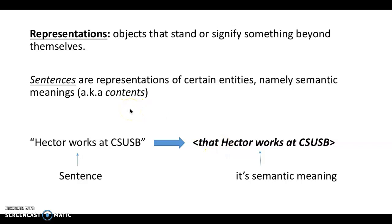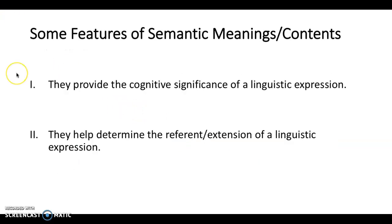Sometimes in the philosophy of language, the meaning of a sentence is called the content of a sentence. So the content of 'Hector works at Cal San Bernardino' is that Hector works at Cal San Bernardino. We will use the terms semantic meaning and content interchangeably. Two features content traditionally seems to have: first, it accounts for the cognitive significance of a sentence. When you hear 'Hector works at Cal San Bernardino', something lights up in your head — you understand what I'm saying. But 'blah blah blah' has no cognitive significance.